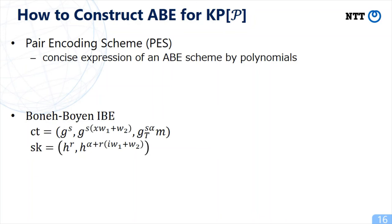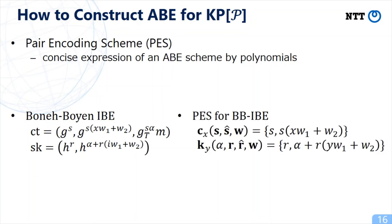Let us give an example. A ciphertext and a secret key of Boneh-Boyen IBE is given as follows. A pair encoding scheme for Boneh-Boyen IBE is given by two polynomials. The ciphertext polynomial C(x) is a polynomial over s, s-hat, and w. The key polynomial K(y) is a polynomial over alpha, r, r-hat, and w. These polynomials represent the exponents of ciphertext group elements and secret key group elements.